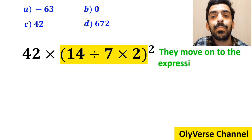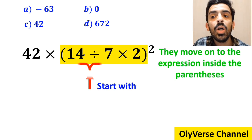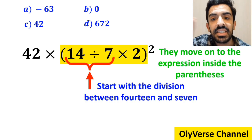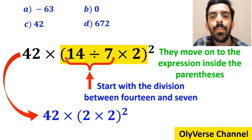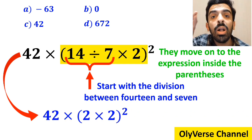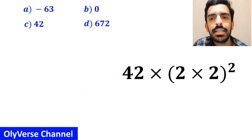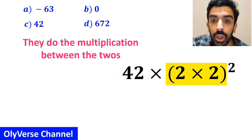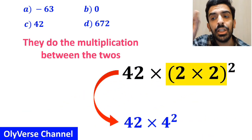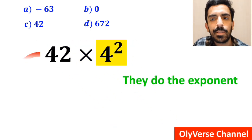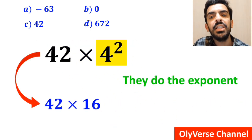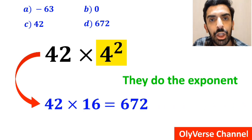Then they move on to the expression inside the parenthesis and start with the division between 14 and 7, simplifying to 42 multiplied by 2 times 2 inside the parenthesis all squared. Next, they do the multiplication between the 2's and write this expression as 42 times 4 squared. Finally, they do the exponent and simplify to 42 times 16, which gives them the answer 672.